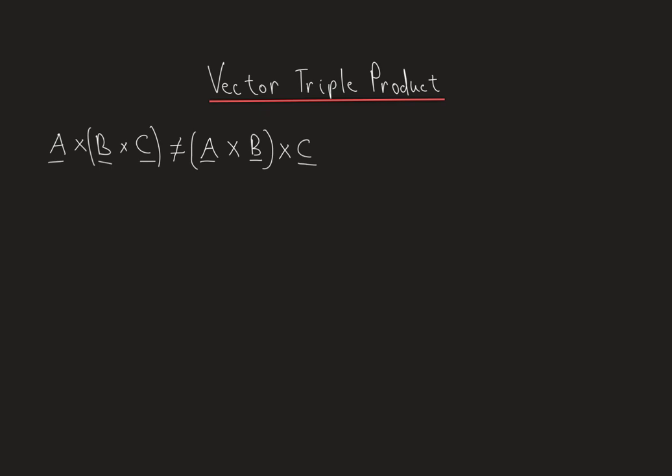What the vector triple product tells us is that the expression a cross (b cross c) is actually equal to the dot product (a dot c) multiplied by vector b, minus (a dot b) multiplied by vector c.